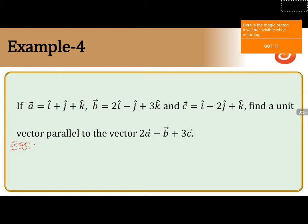There are 3 vectors, and we are asked to find a vector which is parallel to 2a vector minus b vector plus 3c vector. For this, first we will calculate the value of 2a vector minus b vector plus 3c vector.